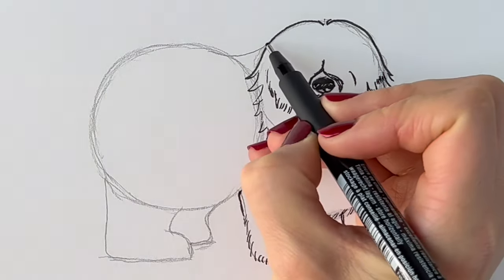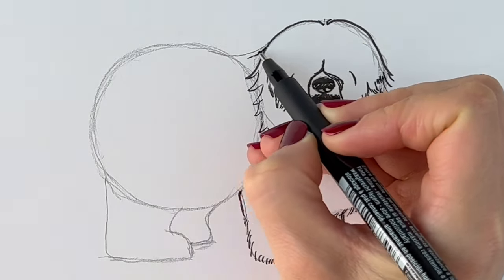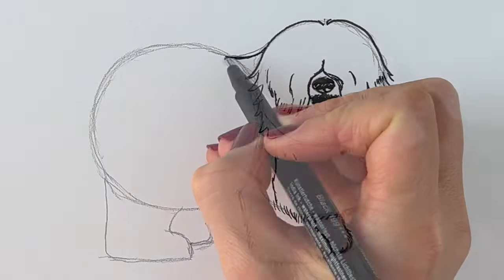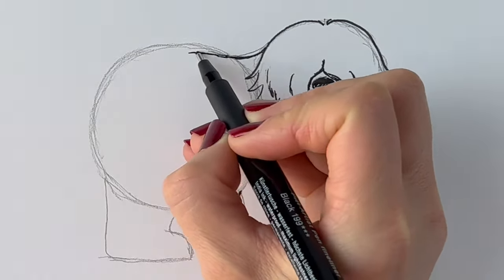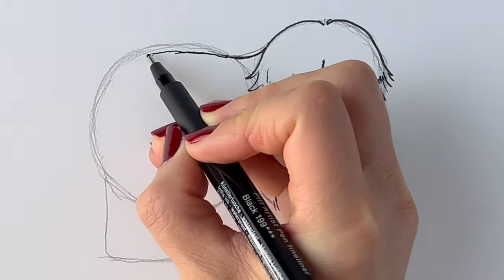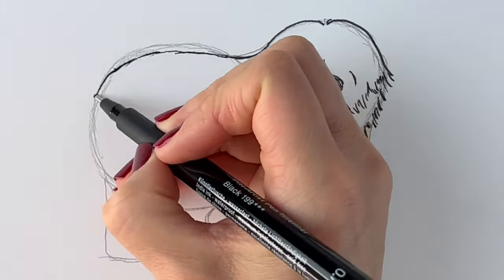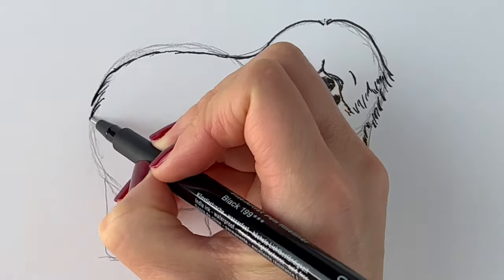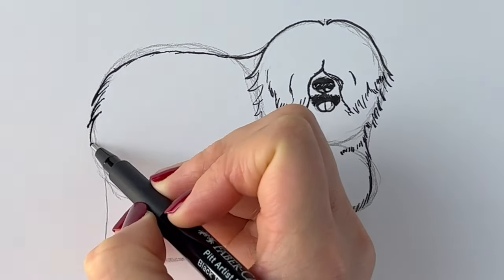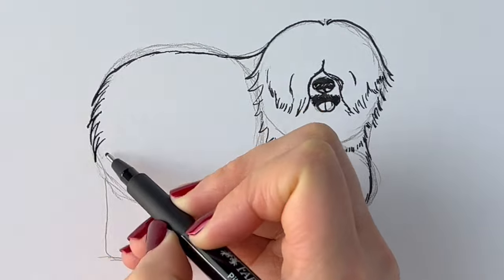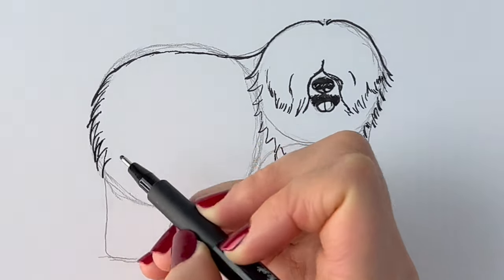Now we're going to continue with the back area. So I'm just going to go underneath the top of this circle here. And I'm carrying on with these long sketchy lines. Can you see that? Down and up. Down and up. Just like that.